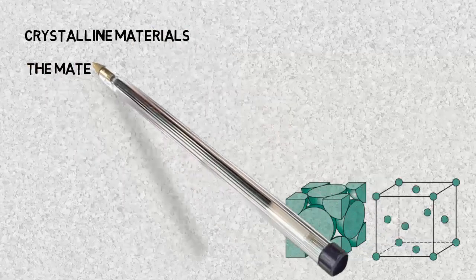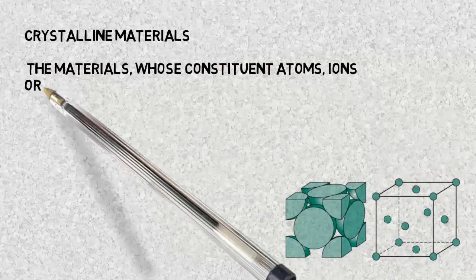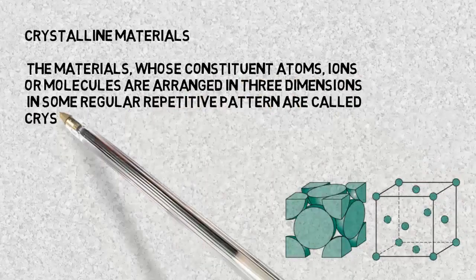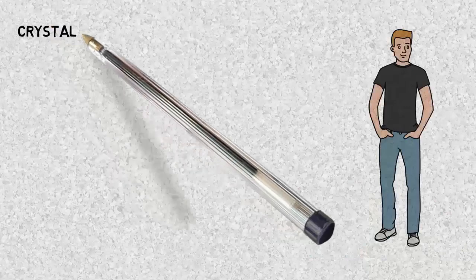So first is crystalline materials. The materials whose constituent atoms, ions or molecules are arranged in three dimensions in a regular repetitive pattern are called crystalline materials.